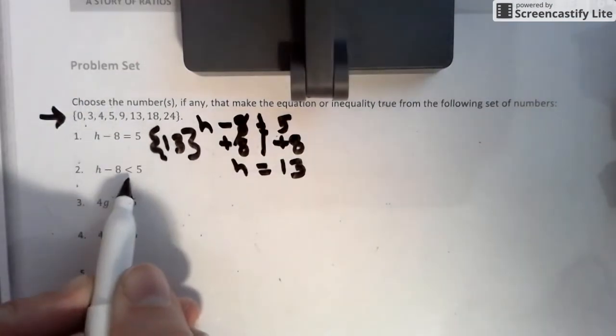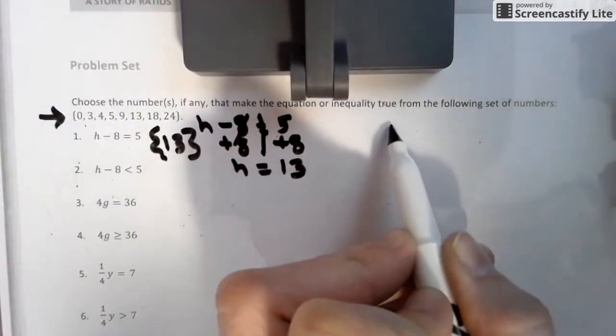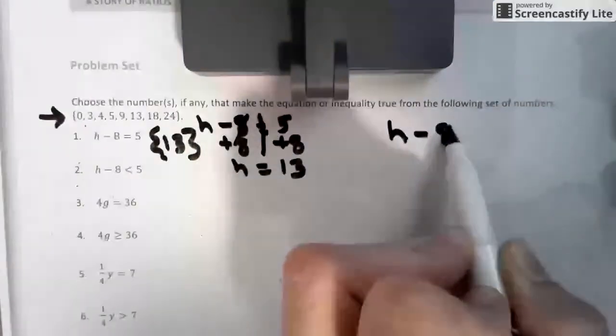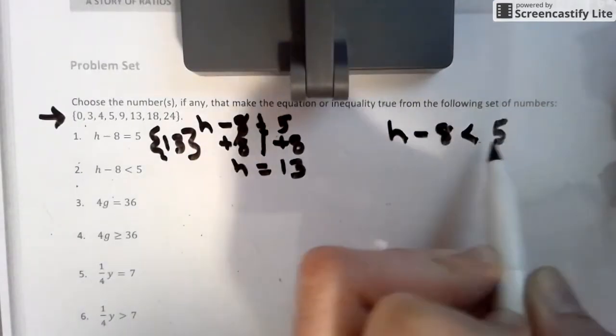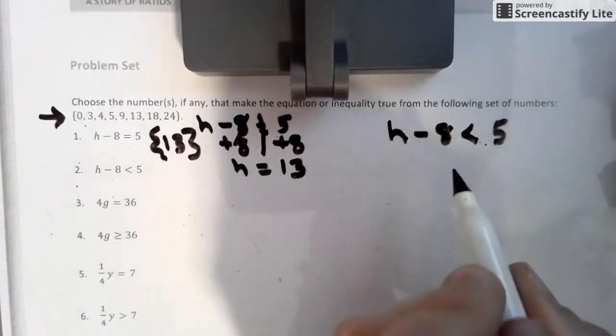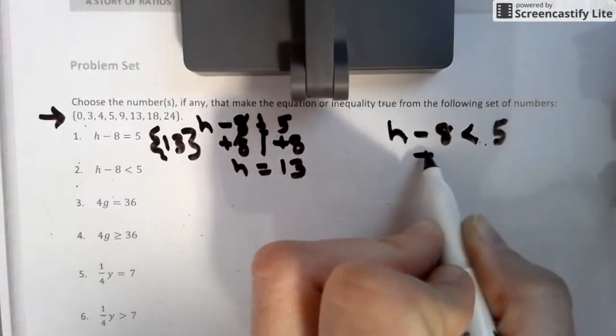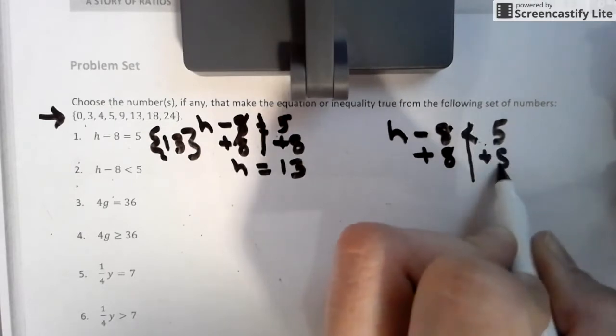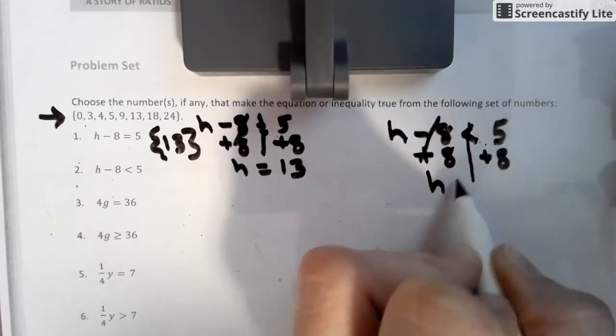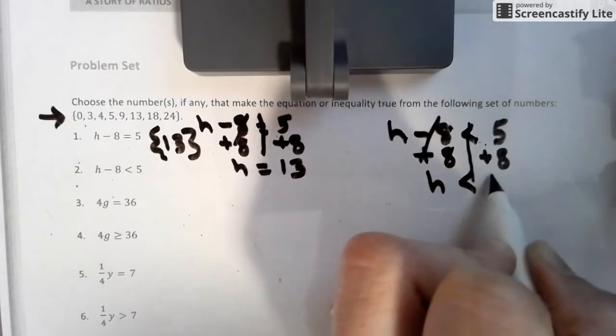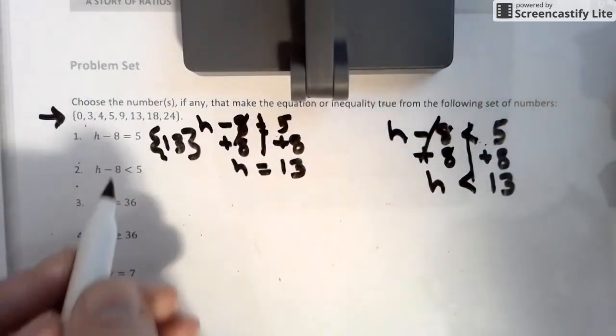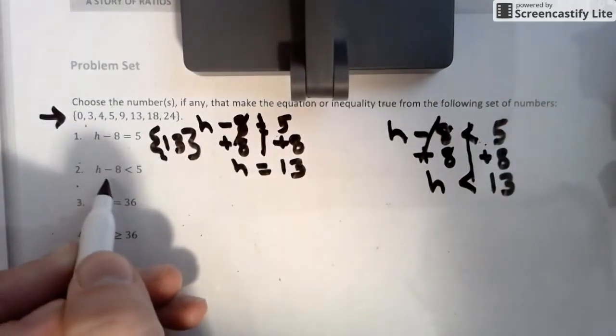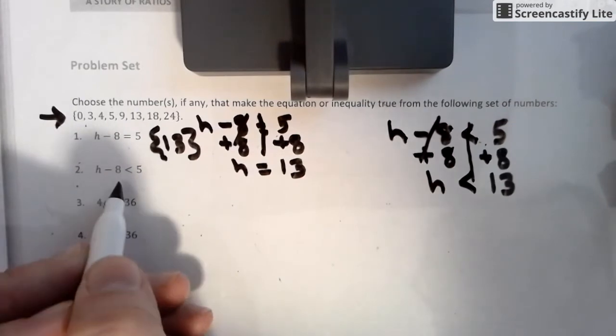But look at this. This is an inequality statement. So we have H minus eight is less than five. So we can treat this the same exact way. But watch how these answers go. Watch this. Yes. So as I keep this balance, I need numbers that are less than 13 to make this statement true. So we need all the numbers less than 13 that work.